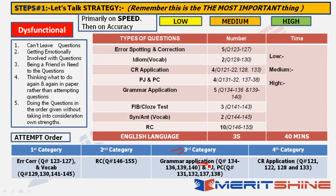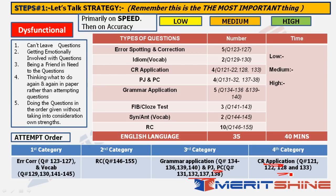Third category: Grammar application questions and para jumble/para completion. Error correction was direct and fast, hence Category 1. Grammar application — where you join and synthesize sentences — takes more time, so it goes in Category 3. Para jumble and para completion are also here. Fourth category (last): Critical reasoning application, which includes main idea and central idea questions requiring more time and deeper understanding.